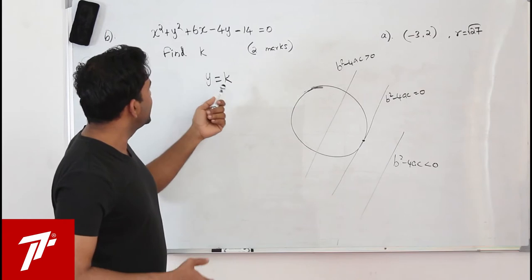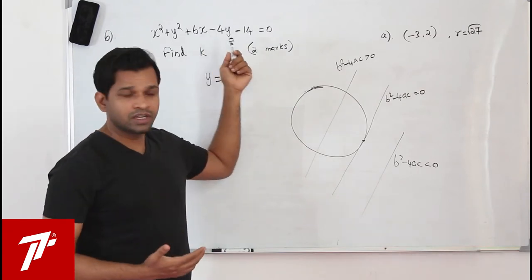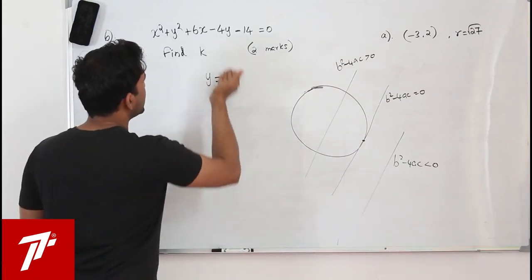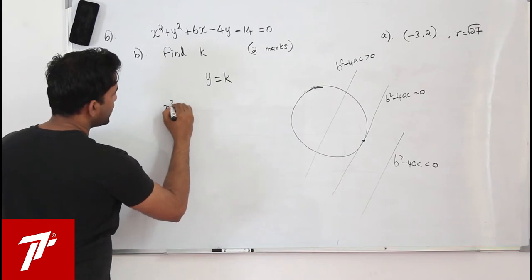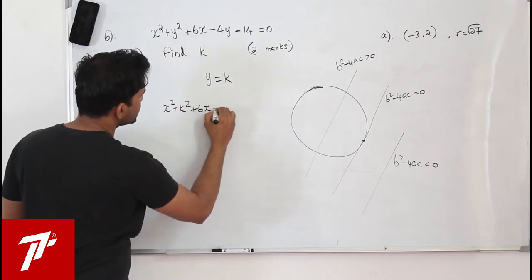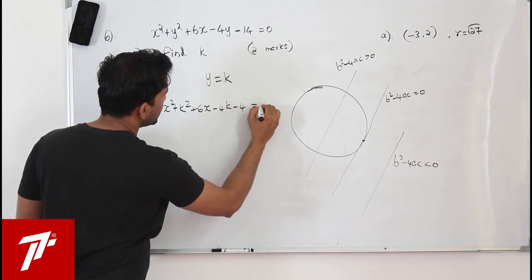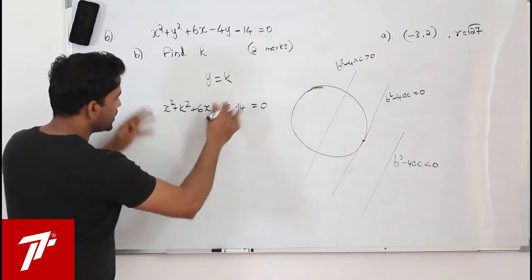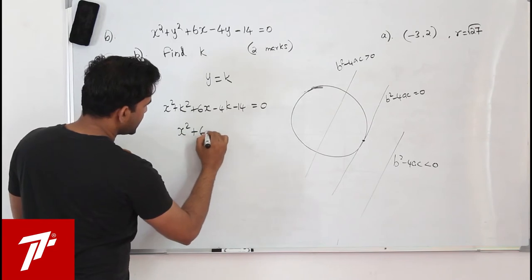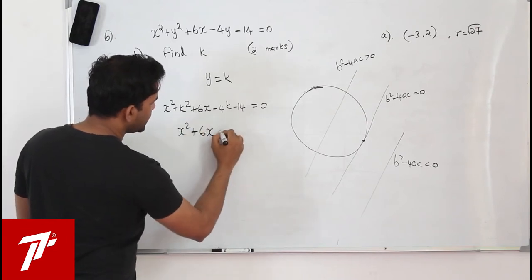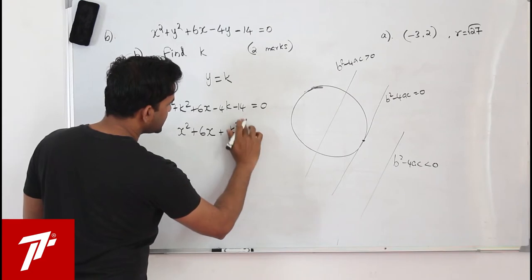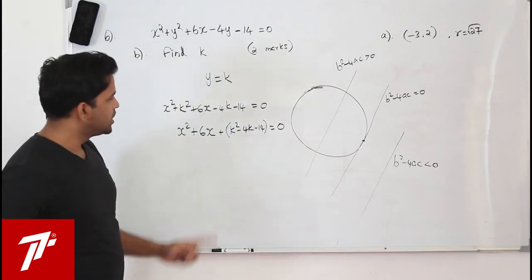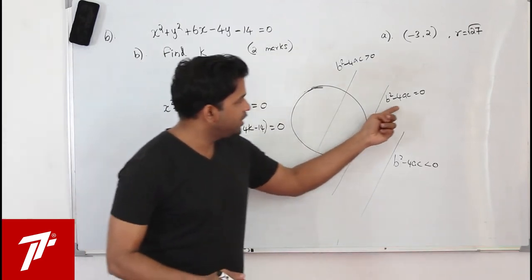For a tangent, b squared minus 4ac equals zero. If the discriminant is less than zero, the line never touches the circle. If greater than zero, the line crosses the circle at two points. Since the line is a tangent, set the discriminant equal to zero. Substitute y = k into the circle equation.